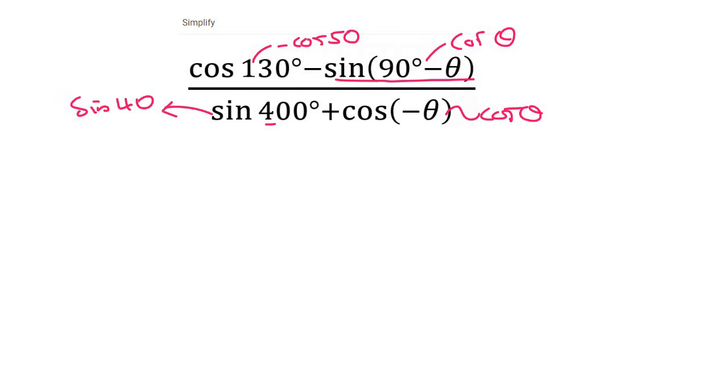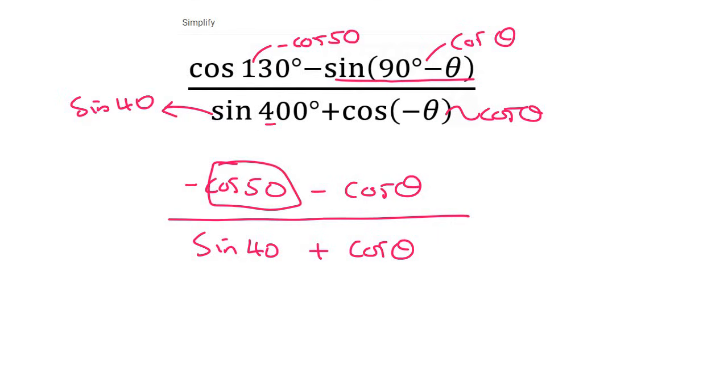Now what we do is just fill that in. So negative cos 50. Notice how we did each part separately. They don't link together. And then sin 40 plus cos theta. This is quite a good one. We cannot cancel like that. That's a very common mistake that I see. It's because we have more than one term at the top. This one's quite weird. But what we can do is realize that these are co-functions, because they add up to 90. So choose one of them and change it. I'm going to choose this top one.